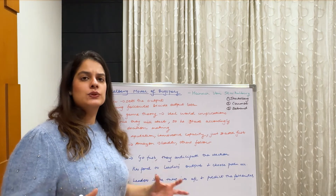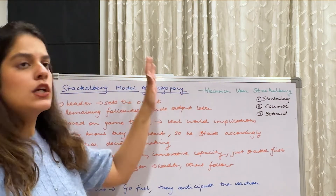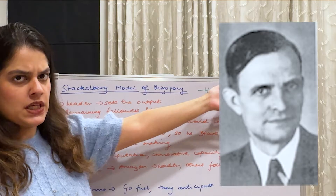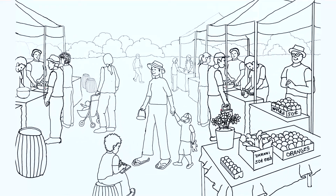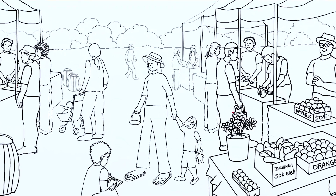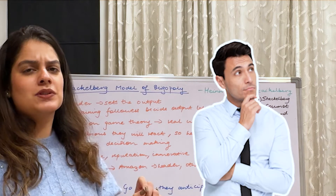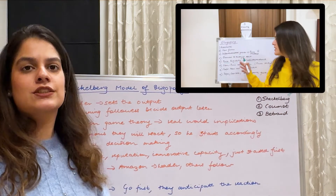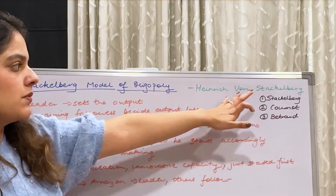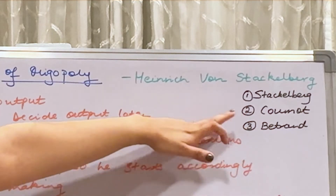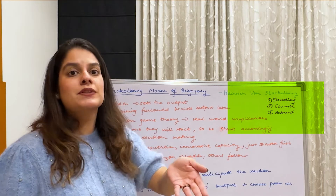Let me introduce the Stackelberg model of oligopoly, which was given by Henry Stackelberg, and hence the name. Oligopoly is a market where there are few firms, there are restrictions to entry and exit, and they produce homogeneous or differentiated products. Under oligopoly, we have three models: Stackelberg, Cournot, and Bertrand. In today's video I'll be discussing only Stackelberg.